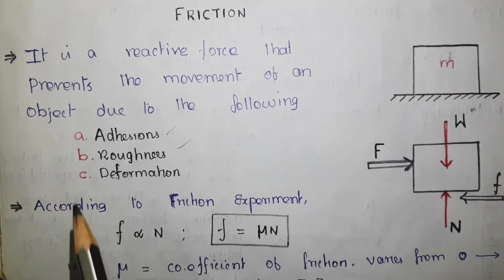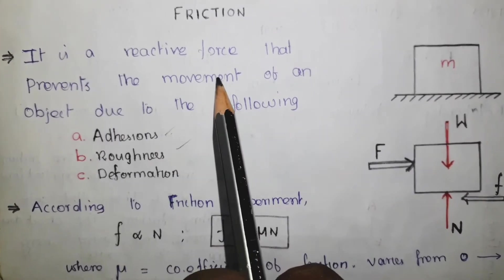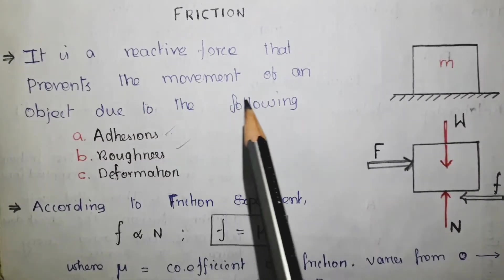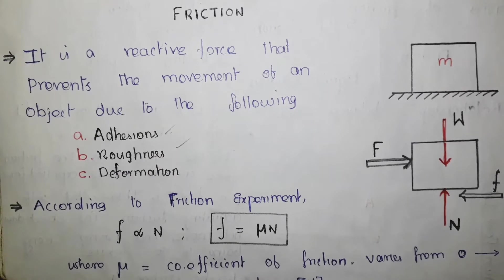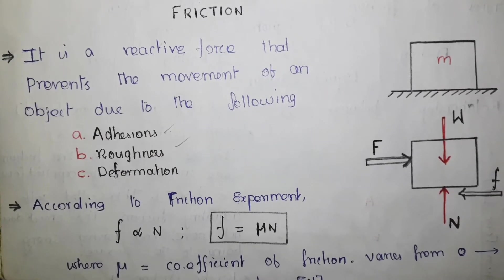Now, let us go to the definition. It is a reactive force that prevents the movement of an object due to the following: adhesion, roughness, and deformation. There are three things that should be noted in friction. First one is it is a reactive force.